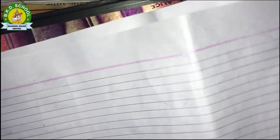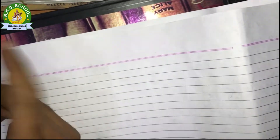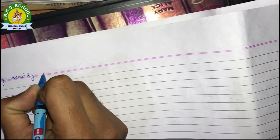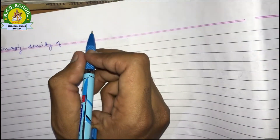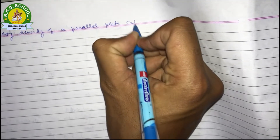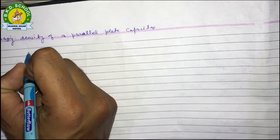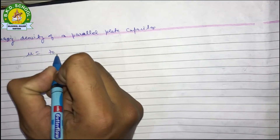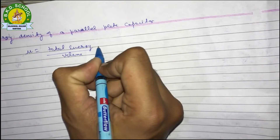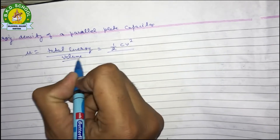One important topic that often appears in option-type exam questions is energy density of a parallel plate capacitor. Energy density U is defined as total energy divided by volume. The total energy is ½CV², and the volume of the capacitor is area A multiplied by separation d, so volume = A×d.